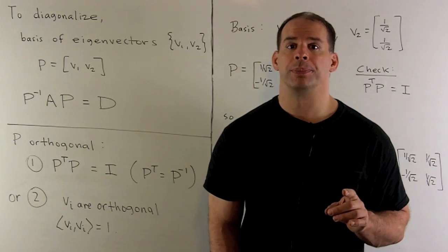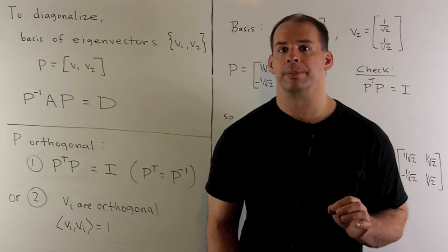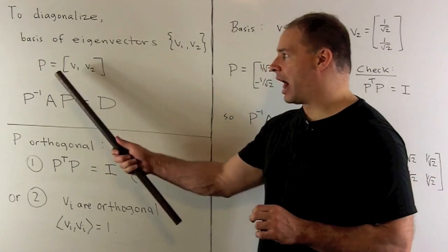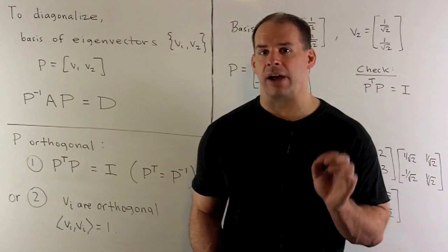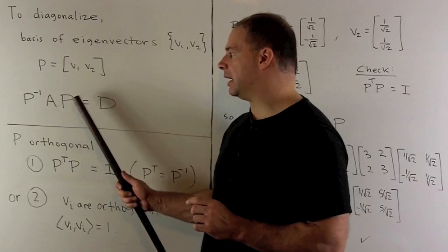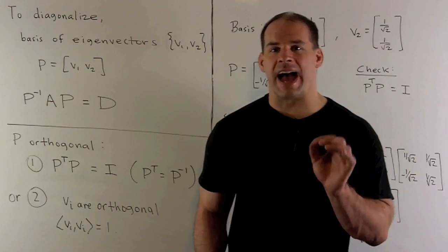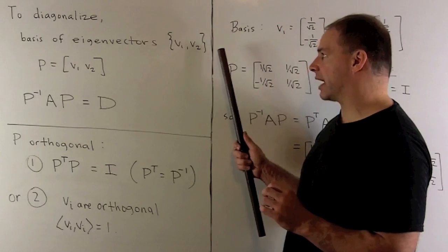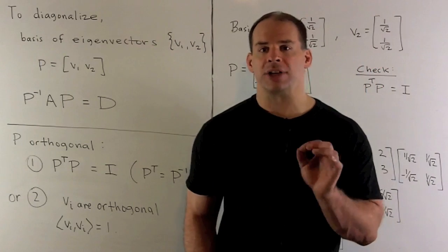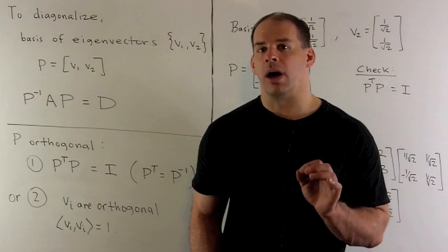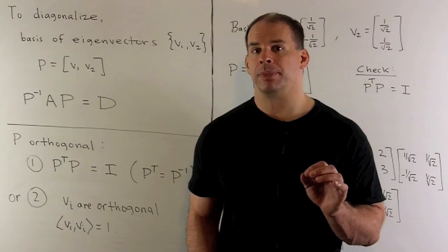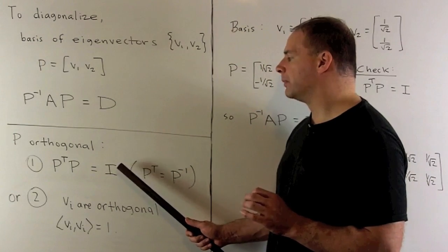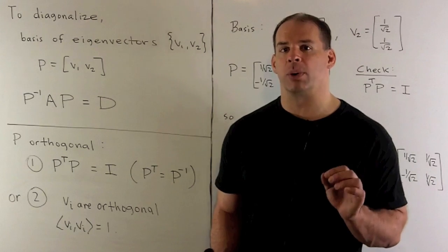To put matrix A in diagonal form, we set up our change of basis matrix P by loading our basis of eigenvectors in as its columns. The equation that diagonalizes A is P inverse A P equals D, where D is a diagonal matrix whose diagonal entries are our eigenvalues in the same order we loaded them in. Our question asks for a bit more: we also want P to be orthogonal, meaning P transpose times P equals the identity, or equivalently P transpose equals P inverse.